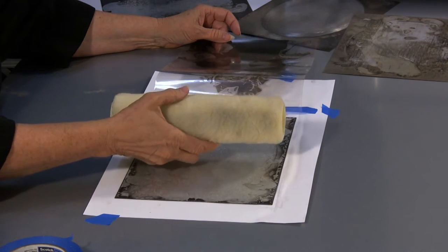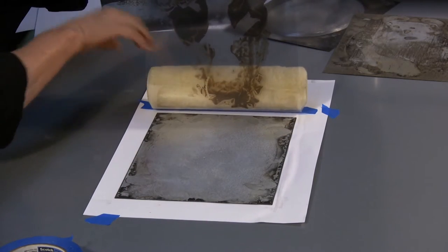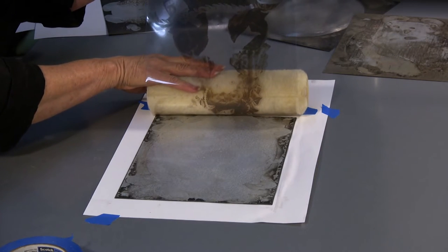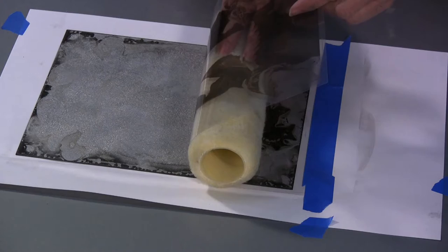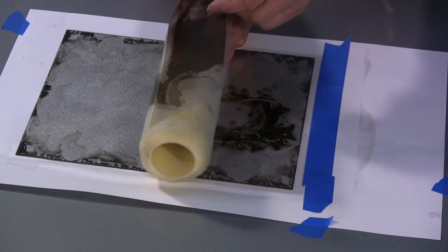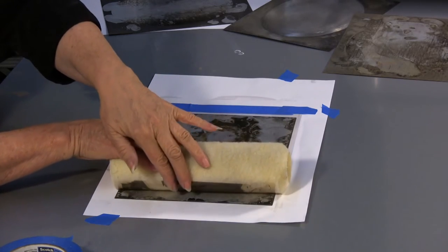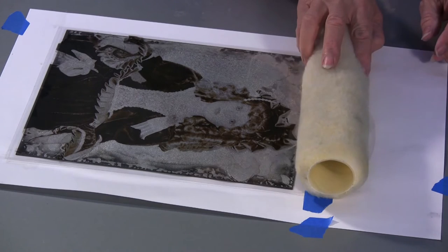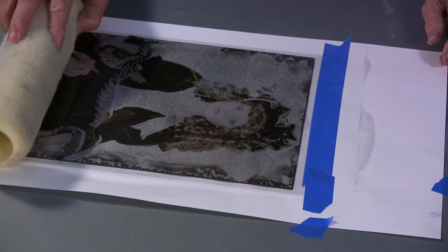These paint rollers don't have any lint on them, so they're nice to use because you won't get lint on your image. And before you ever put your solution down, practice how it should be applied to the plate. You can see that I'm pushing with the roller all the way to the end and sliding it across. So this is the motion that's pressing the plate in contact with the film.